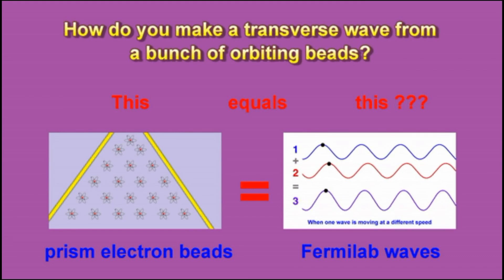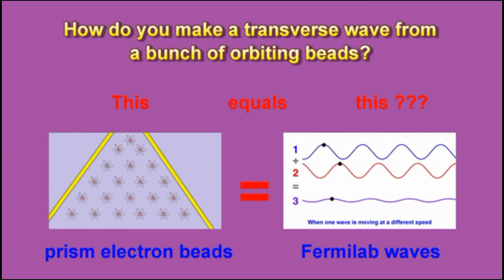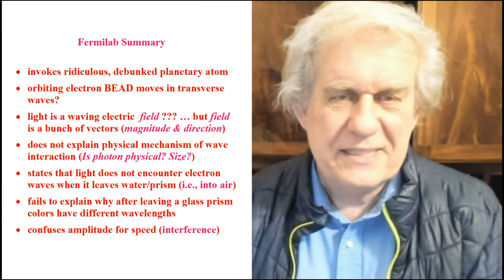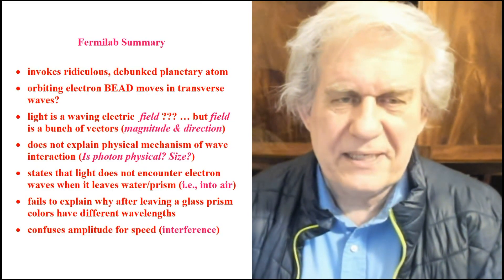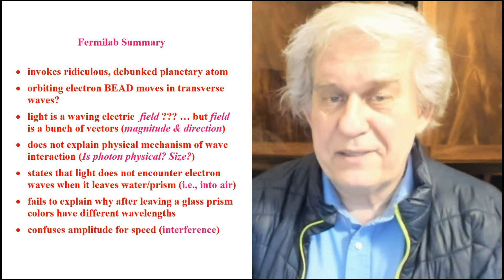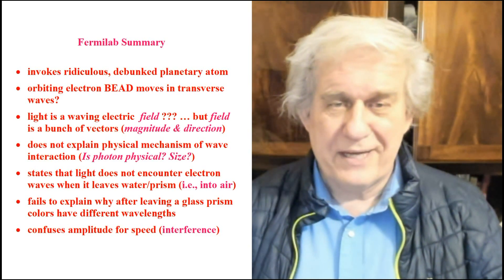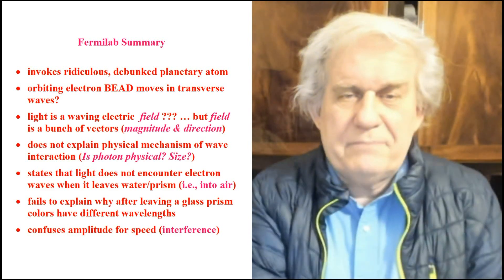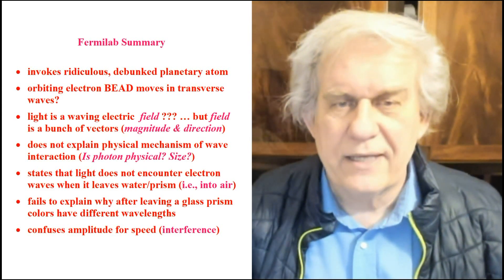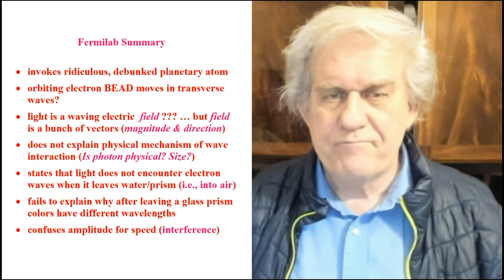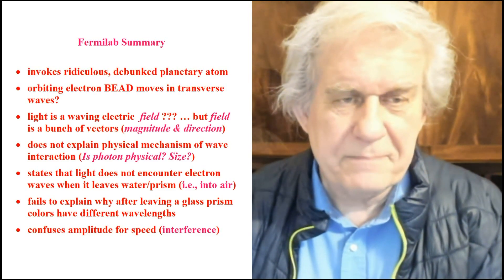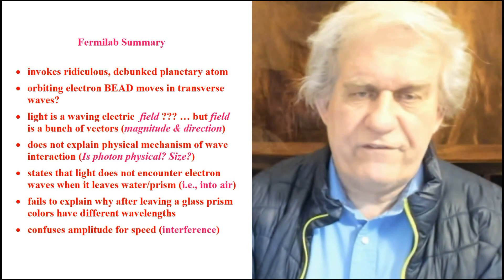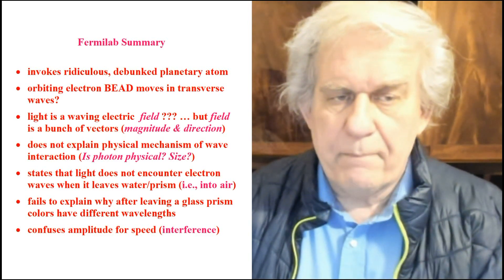The question is: how do the electron beads of the prism equal wave number one, which is a very slow-moving wave? You cannot even conceptualize it — you cannot visualize what they're saying. That's why they never draw it, they never illustrate this stuff, because it's un-illustratable. I don't plan to hold my breath, but it's up to them to illustrate it. I did my best. I cannot illustrate what they're saying.